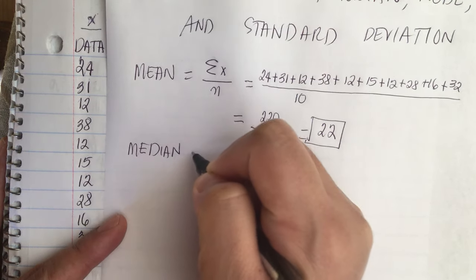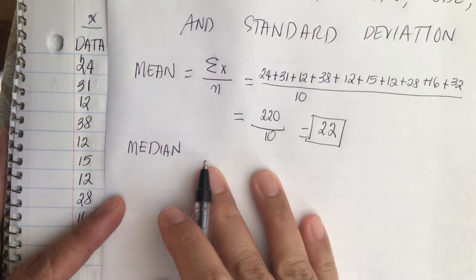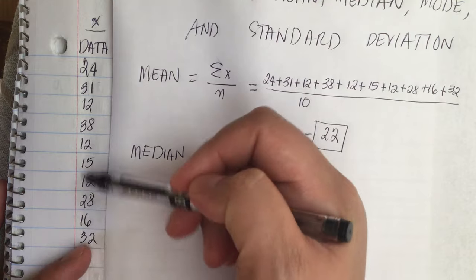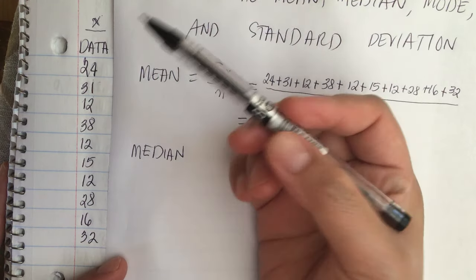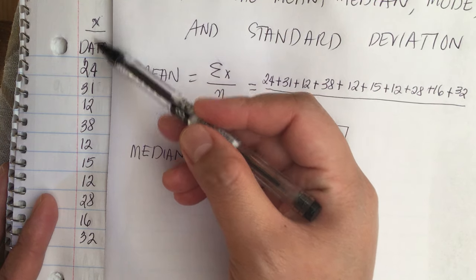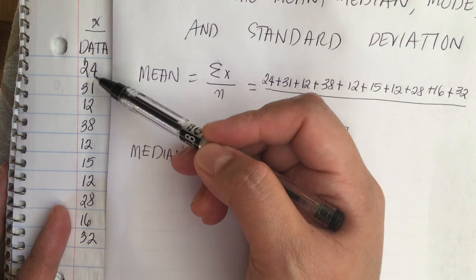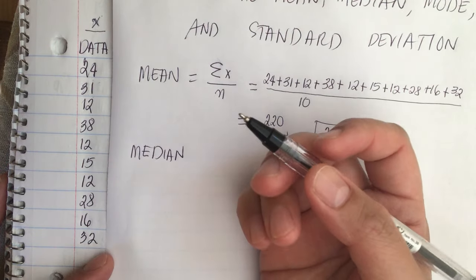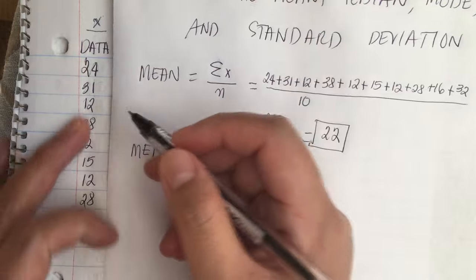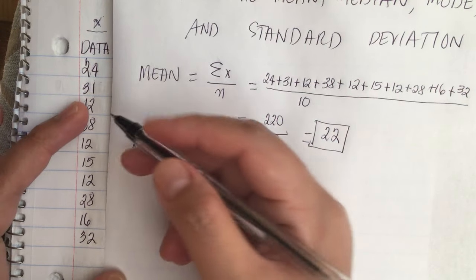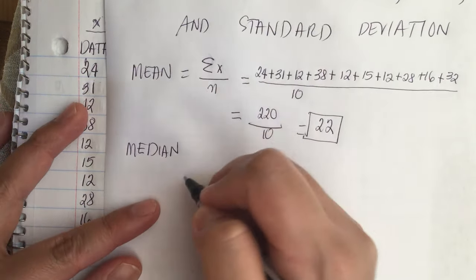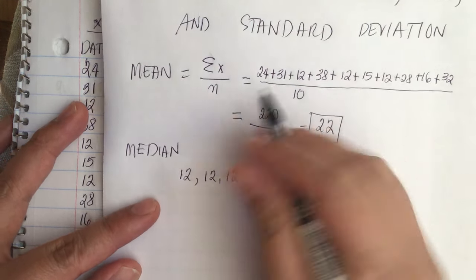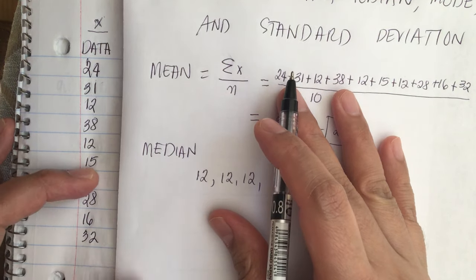Now to find the median. The median is the number in the middle. Since the raw data x is not arranged in ascending order, we have to do that first. We have three 12s: 12, 12, 12, and then 15.